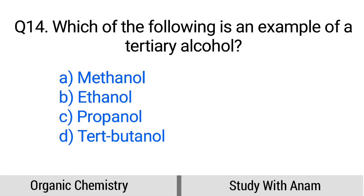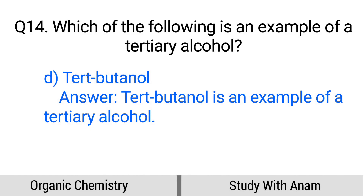Question number 14. Which of the following is an example of a tertiary alcohol? Option A: Methanol, B: Ethanol, C: Propanol, D: Tert-butanol. The correct option is option D, Tert-butanol. Tert-butanol is an example of a tertiary alcohol.